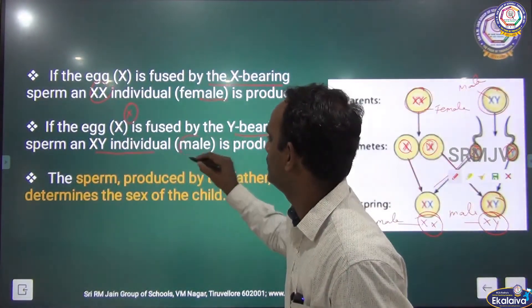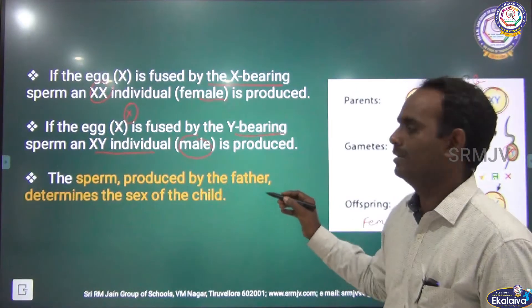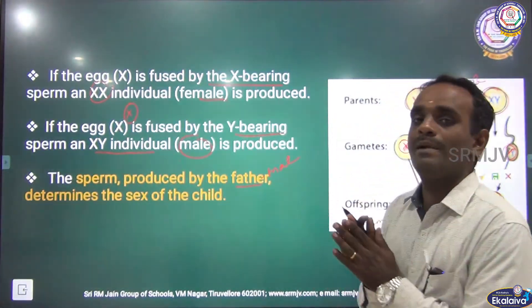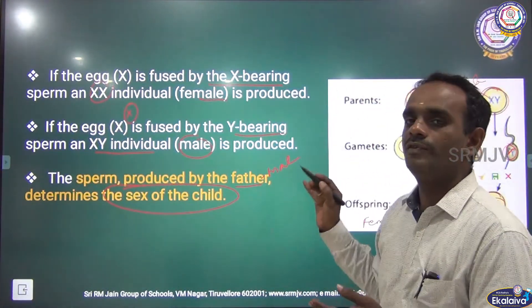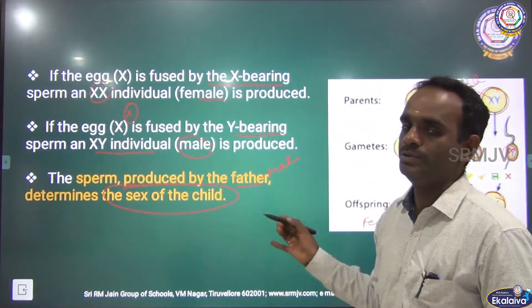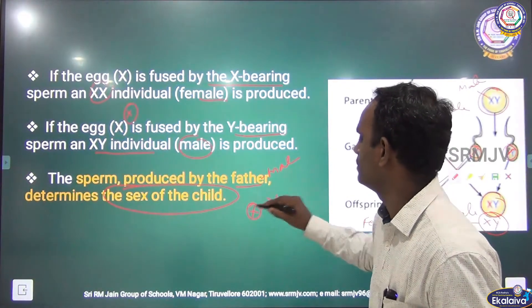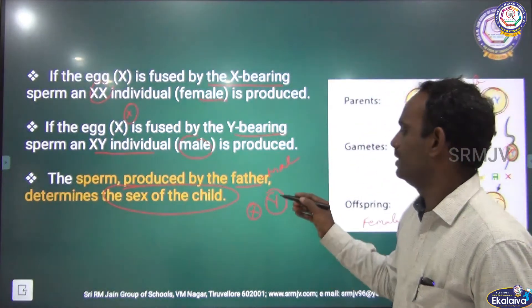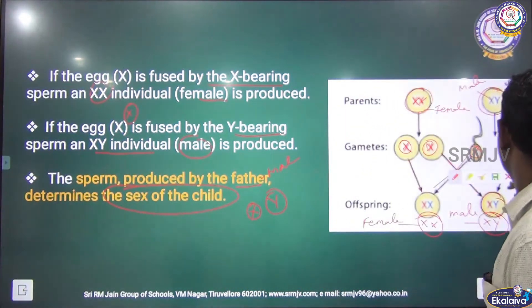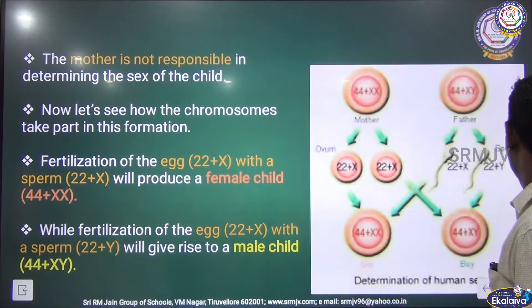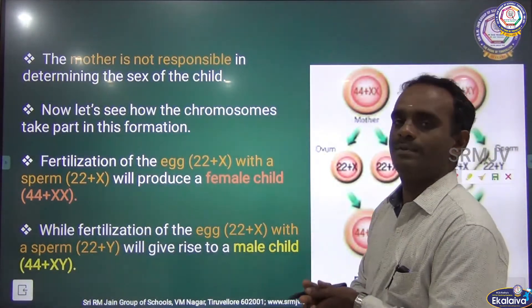If the egg having X gametes fuses with Y-bearing sperm, an XY individual is produced. XY individual means a male child is produced. The sperm produced by the father determines the sex of the individual — very, very important. Father only determines the sex of the individual because the father has two different types of chromosomes, X and Y. The mother is not responsible in determining the sex of the individual; the father only is responsible.